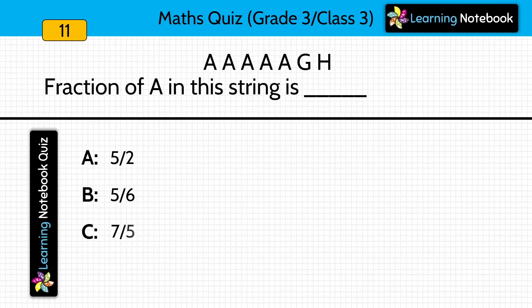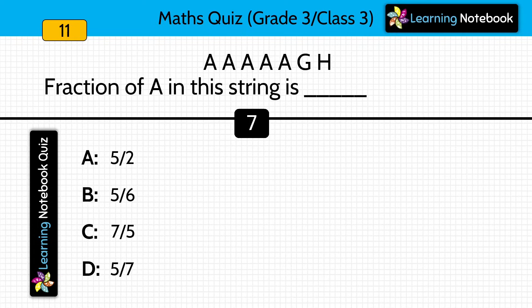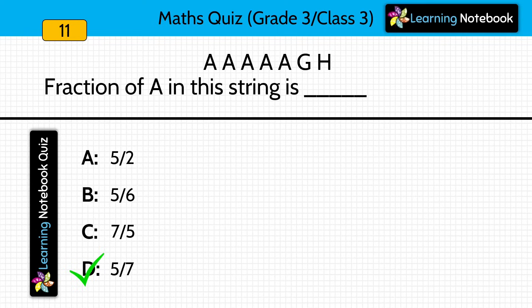Question eleven: fraction of 'a' in this string — the string contains a, a, a, a, a, g, h. What is the fraction of 'a' here? Answer is 5 by 7.